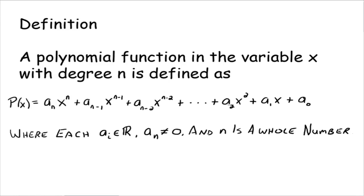We continue down to plus a sub 2 x squared, plus a sub 1 x, plus a sub 0, where each a sub i is a real number. This fancy-looking R represents the set of real numbers.